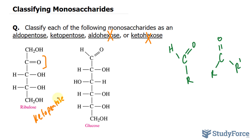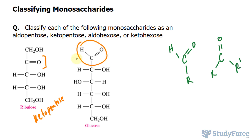Let's do the same thing for glucose. As you can see, glucose has one, two, three, four, five, six — six carbons. And we can tell that it's a hexose. And at the very top here, that's an aldehyde — I drew that earlier. So this is an aldohexose.